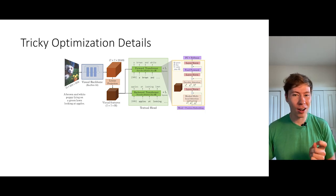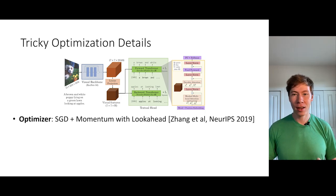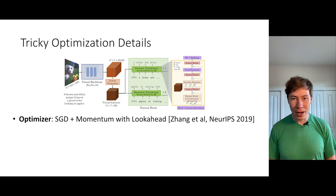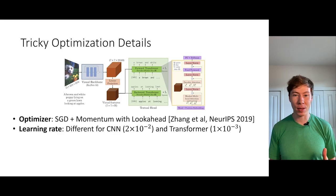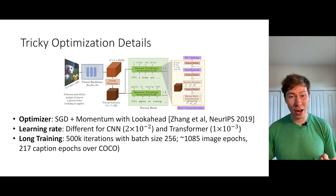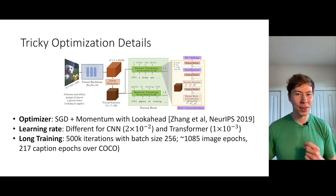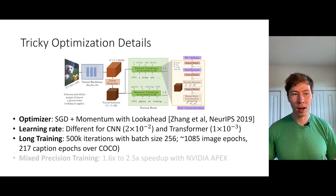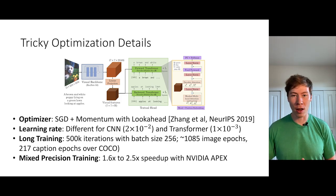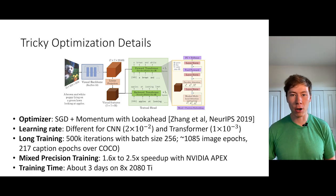Even though this model is conceptually simple, there are a couple of tricky bits needed to get it to work. On the optimization side, rather than using straightforward SGD with momentum, we found it helped to use the lookahead optimizer proposed by Zhang et al. at NeurIPS. An important bit was about learning rates — CNNs and Transformers actually want different learning rates, so we set different learning rates for each. Third, you have to train for a pretty long time. We train from scratch on COCO, which has about 118,000 images and about five captions per image, for about 500,000 iterations with a batch size of 256 — more than 1,000 epochs over images and more than 200 epochs over captions. We sped this up with mixed precision training through NVIDIA APEX, giving 1.6 to 2x speedup, and overall training takes about three days on a server with eight 2080 Ti GPUs.